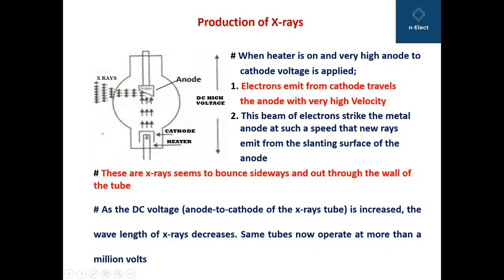This beam of electrons strikes the metal anode at such a speed that new rays emit from the slanting portion or slanting surface of the anode. These X-rays seem to bounce sideways and out through the wall of the tube.